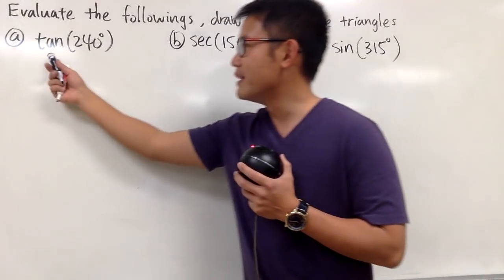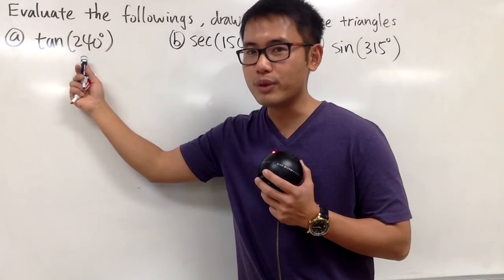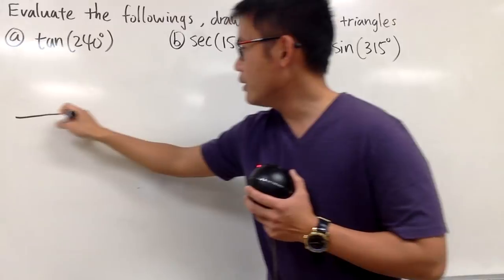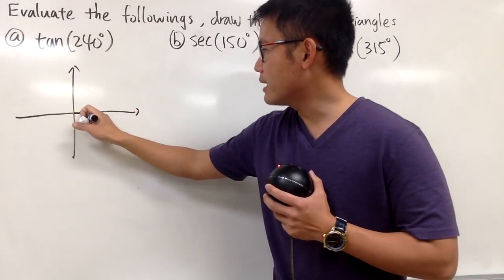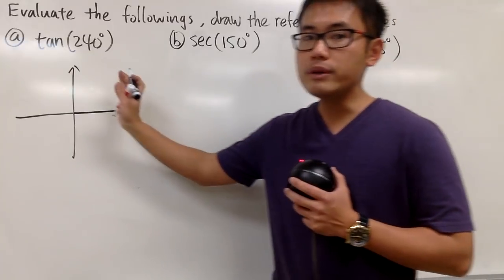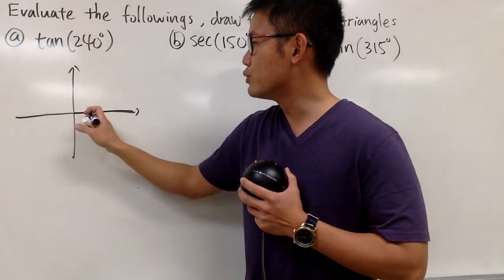So first of all, this is tangent of 240 degrees. Right away, we are going to draw our picture like this. Starting from the positive x-axis and rotate counterclockwise 240 degrees.